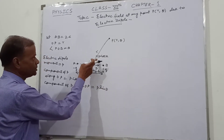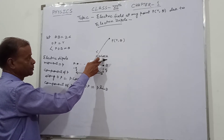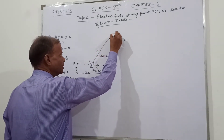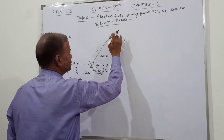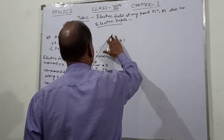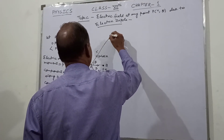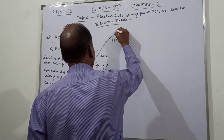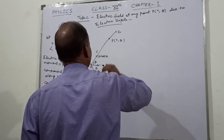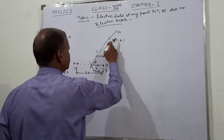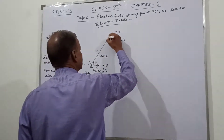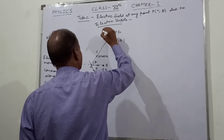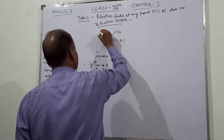So this dipole component will give its electric field along this one — this is the electric field E1 — and perpendicular to it this will be the electric field E2.